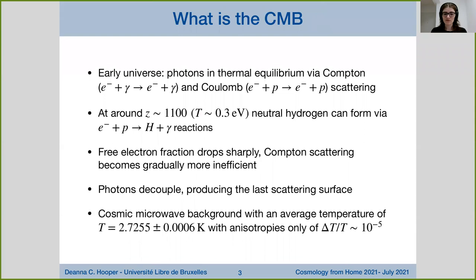As Compton scattering becomes more and more inefficient, the photons can actually decouple — they break away from the protons and electrons, producing the last scattering surface. This is the last surface in time at which these photons scattered off other particles. These photons have been propagating freely ever since, largely unperturbed after the time of decoupling. Today these photons make up the cosmic microwave background radiation or CMB, which is background radiation we can see in every direction in the sky.